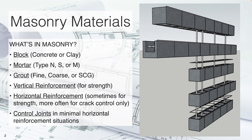We'll have vertical reinforcement for vertical bending strength of the wall. We'll have horizontal reinforcement sometimes for the horizontal bending strength of the wall, but more often just for crack control. We'll also have control joints to break up the masonry walls, and the frequency of those control joints is going to be dependent on the horizontal reinforcement that we've selected.